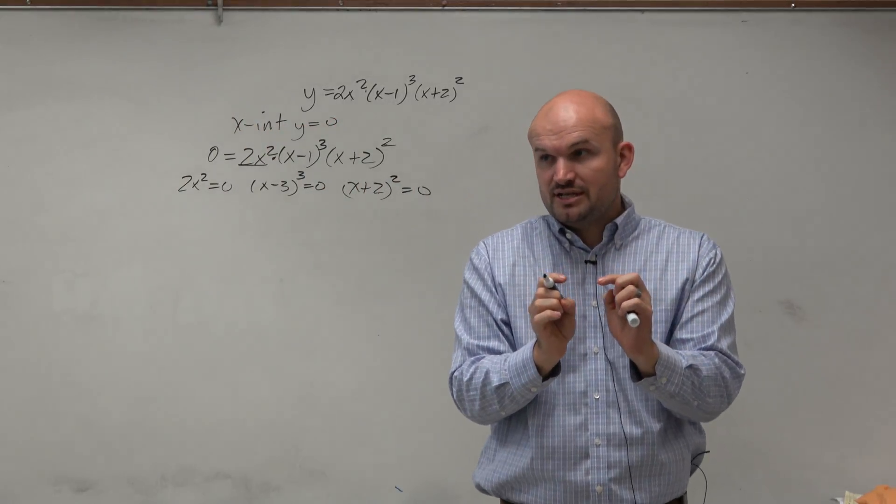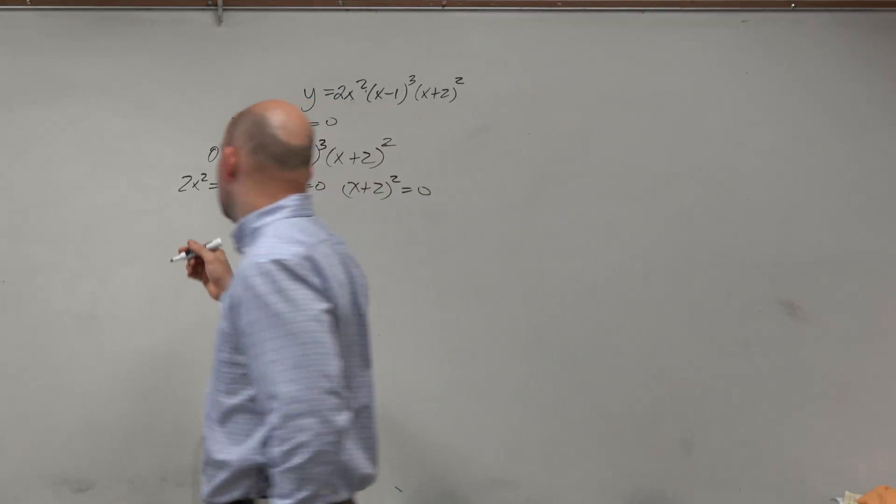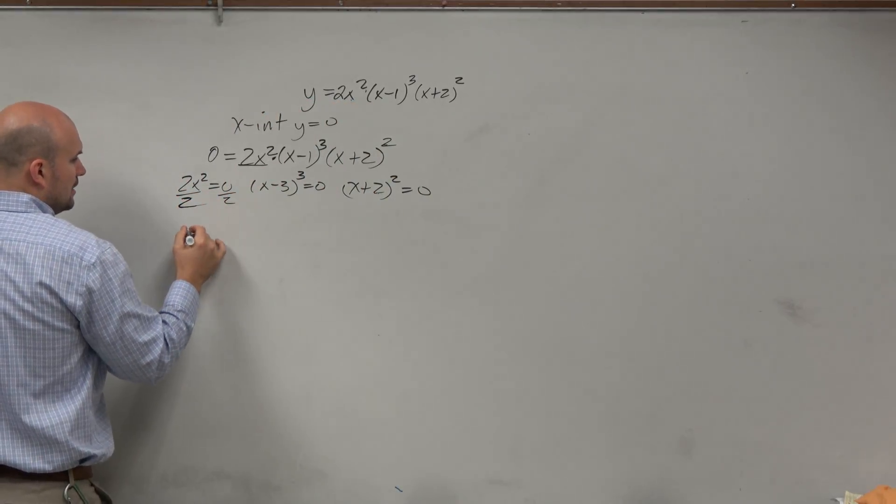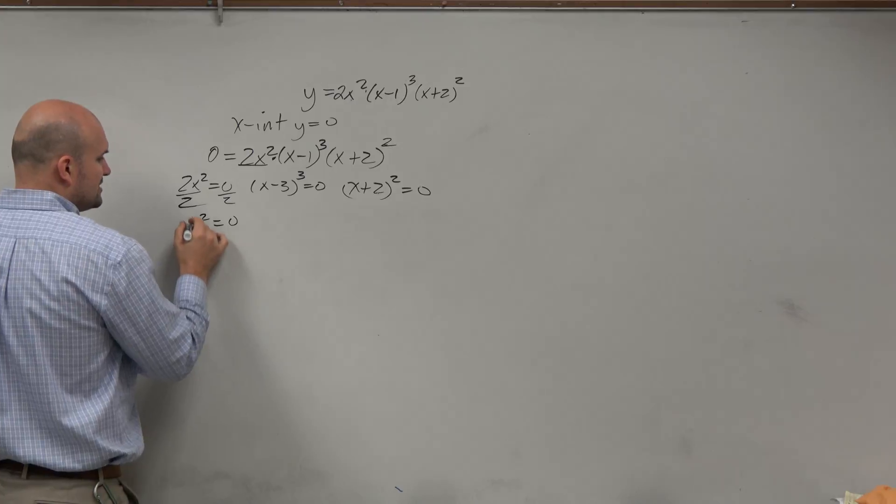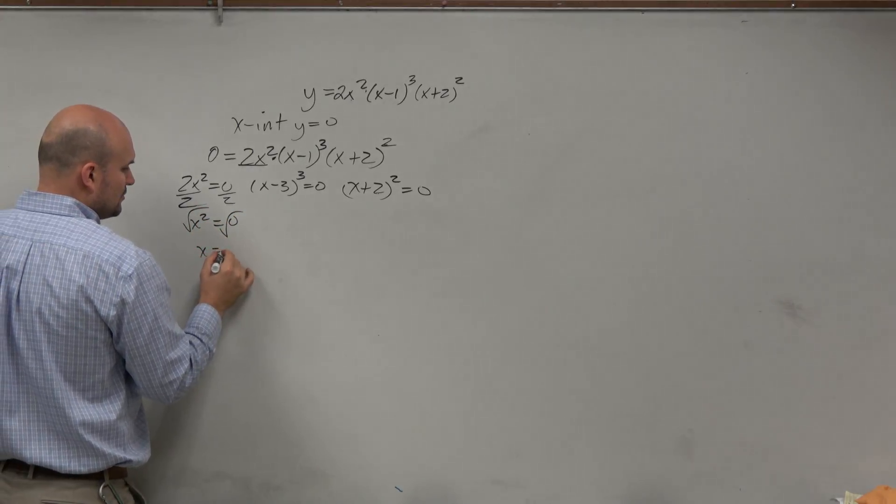Now, for each one of these equations, can I solve? Well, yeah, right? So I can divide by 2, and I have x² equals 0. So I take the square root, and I get x equals plus or minus 0?